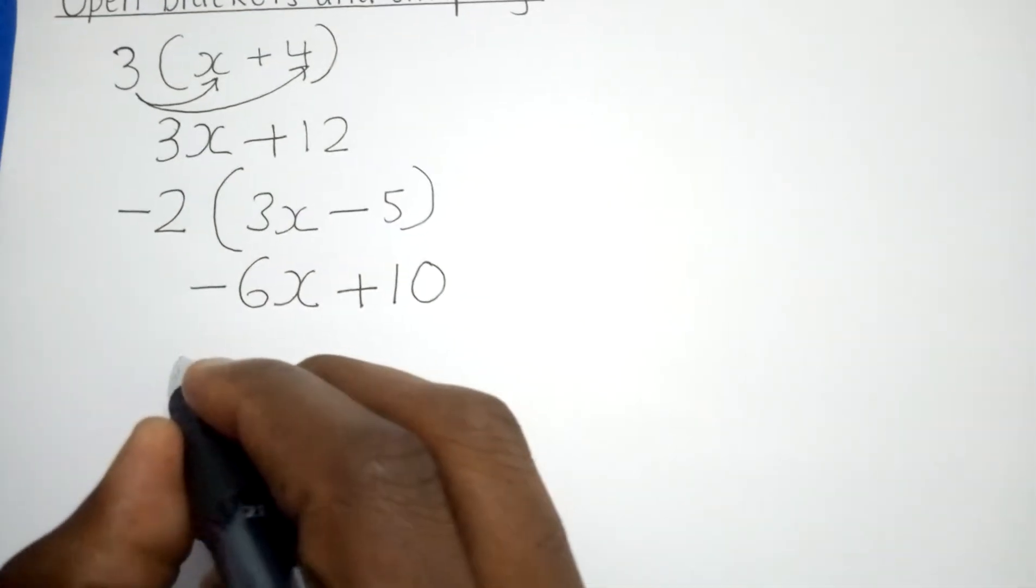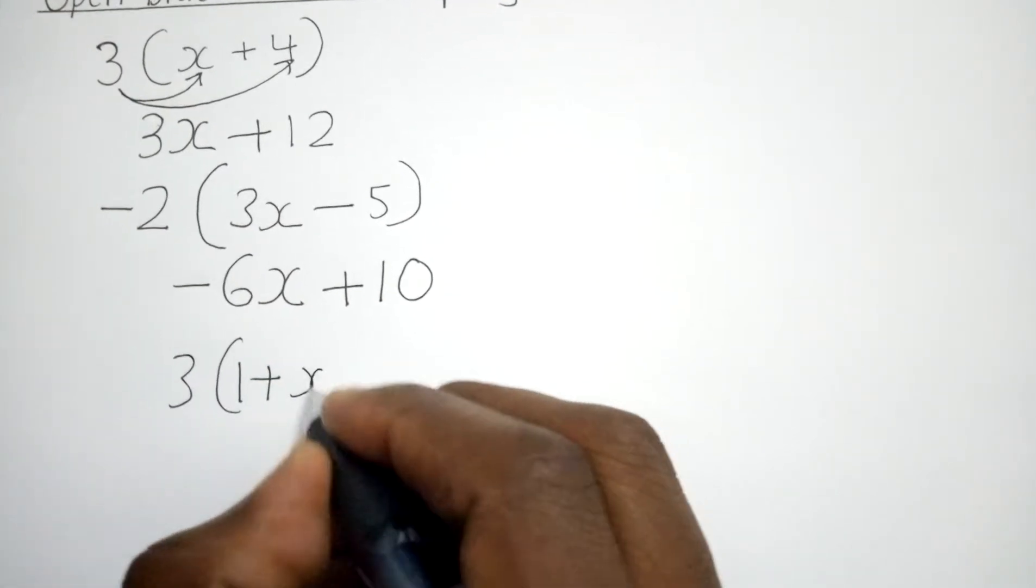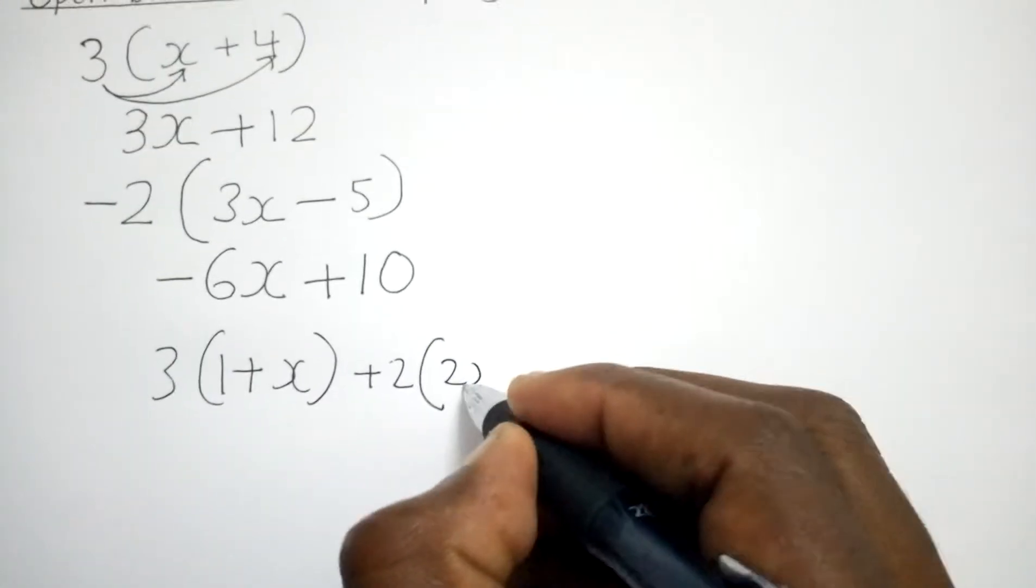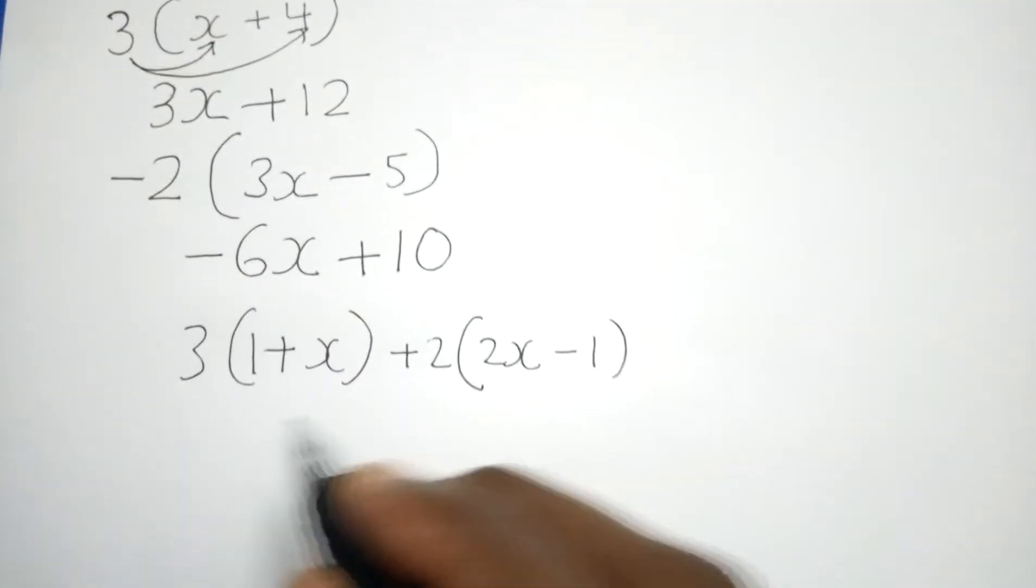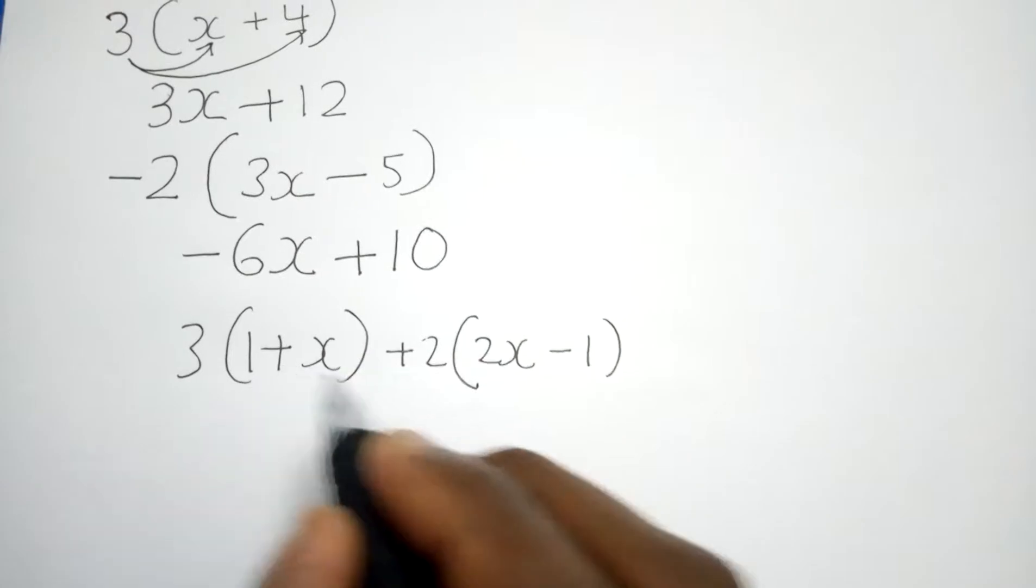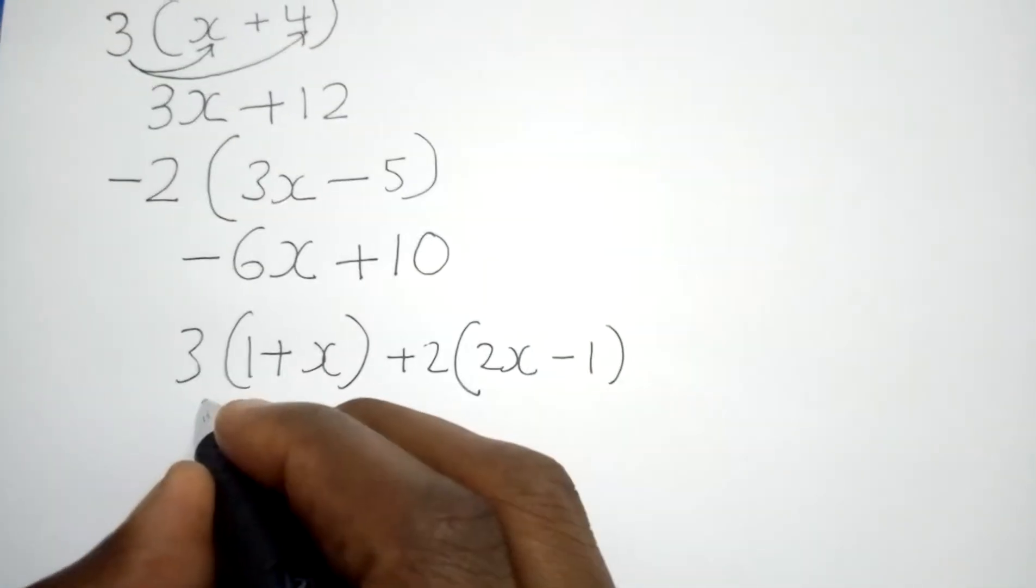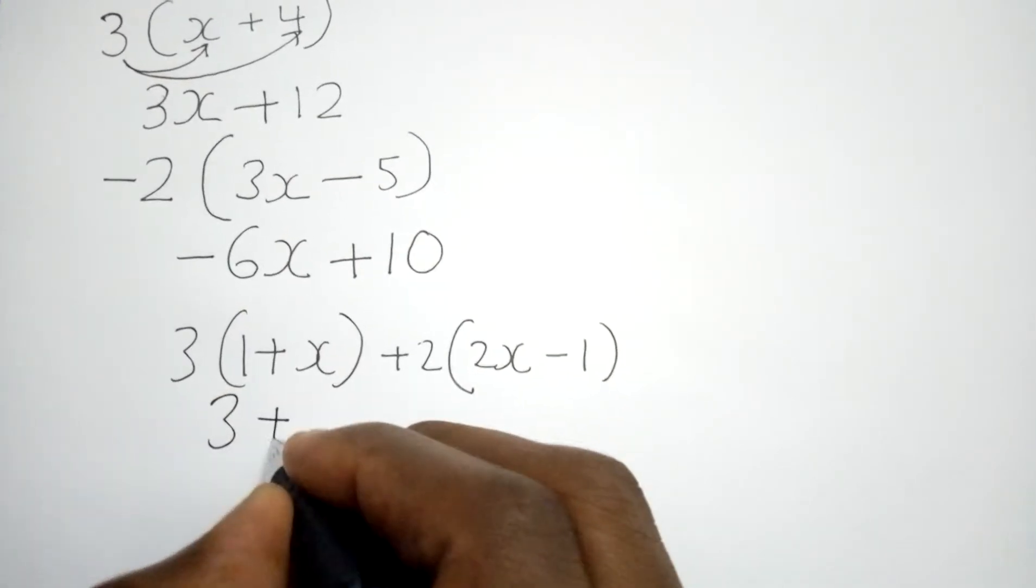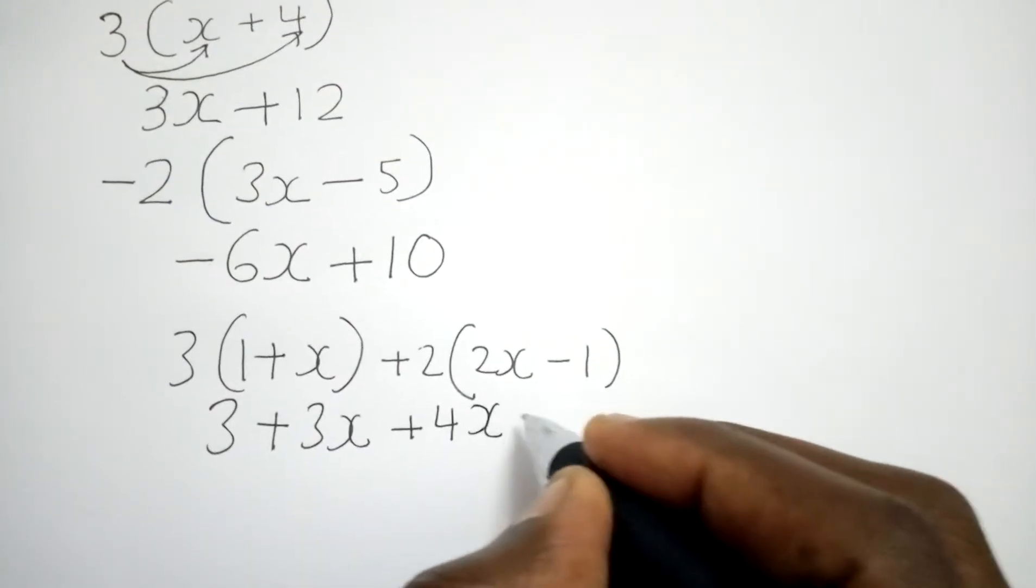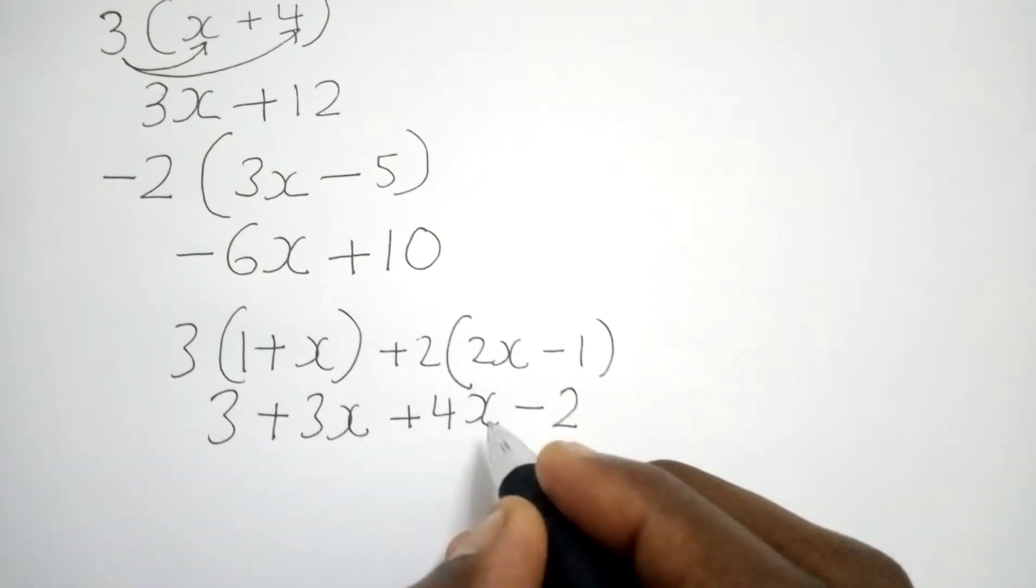Now what if we have got two brackets? For instance, 3(1+x) and positive 2(2x-1). As we said, this will multiply both of the numbers inside the bracket, 2 will multiply both the numbers inside the bracket. And we shall get 3+3x, and this side we shall get positive 4x minus 2.